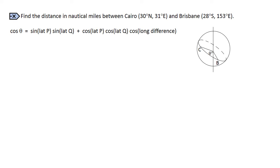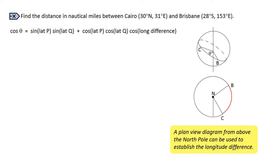We're given all the latitudes and the only tricky thing is finding the longitude difference. This is sometimes best worked out using a bird's eye plan view diagram. Cairo is 31 degrees east of the prime meridian and Brisbane is 153 degrees east of the prime meridian.